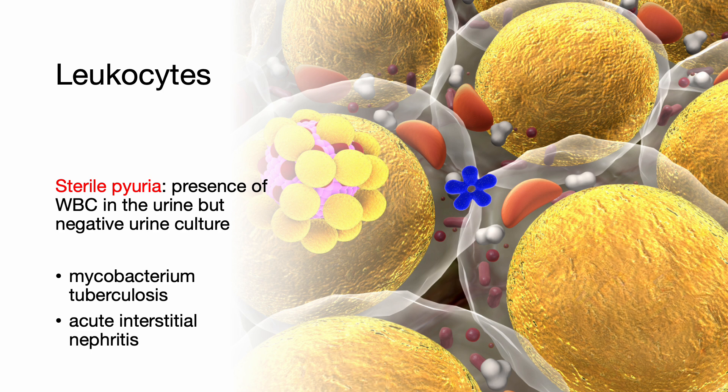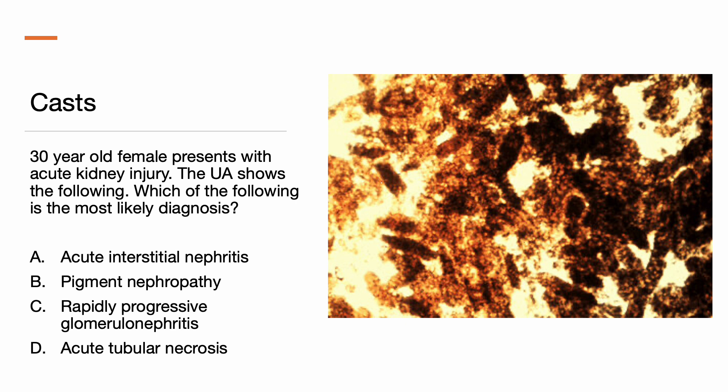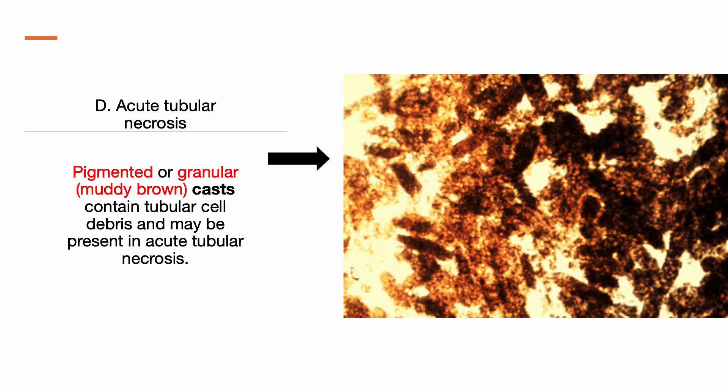Two conditions related to sterile pyuria include Mycobacterium tuberculosis and acute interstitial nephritis. Here's a 30-year-old female who presents with acute kidney injury. The urinalysis shows findings on the right-hand side. Which of the following is the most likely diagnosis: acute interstitial nephritis, pigment nephropathy, rapidly progressive glomerulonephritis, or acute tubular necrosis? The correct answer is acute tubular necrosis. Casts seen in the image are pigmented or granular muddy brown casts that contain tubular cell debris and may be present in acute tubular necrosis. The severity of acute kidney injury correlates with the number of casts and presence of renal tubular epithelial cells.